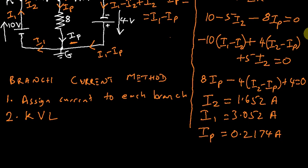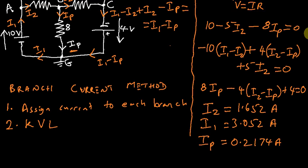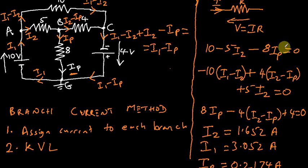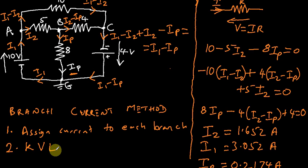So just a quick recap: the branch current method involves assigning currents to each branch and then writing out loop equations using KVL — Kirchhoff's voltage law. That's the branch current method.